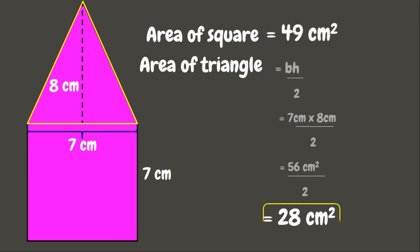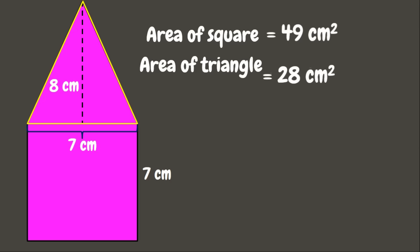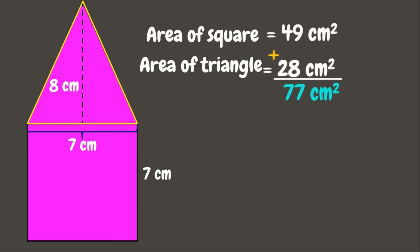Now we combine the two areas together. We add 49 square centimeters and 28 square centimeters, and that gives us 77 square centimeters. Therefore, 77 square centimeters is the area of this composite figure.